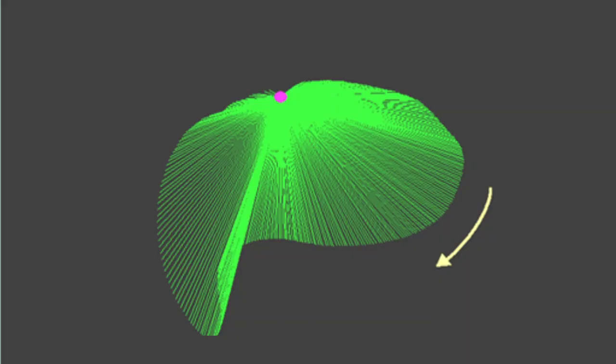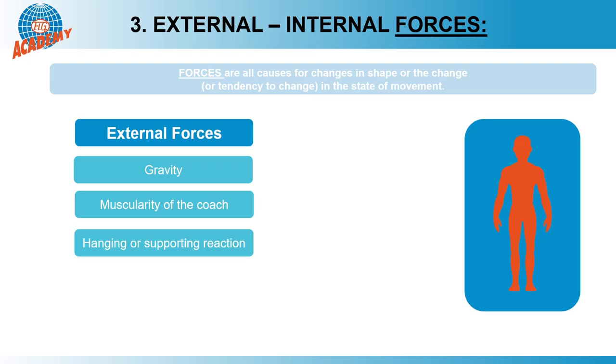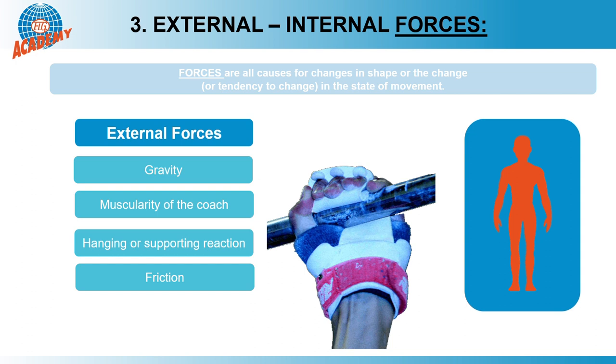The hanging and supporting reactions of the different gymnastic apparatuses affect the gymnast from outside and are therefore external forces. If we plot the direction of the forces as lines, we can see that large hanging and supporting reaction forces to the front and to the back are generated before a dismount at the high bar. Therefore, this apparatus must be tensioned by cables. For the grip at high bar, a special effort is necessary in gymnastics to avoid injuries of the palms. The resulting frictional forces are external forces.